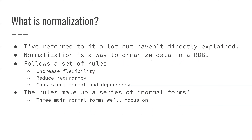So let's jump right in. What is normalization? I've referred to it a lot but haven't directly explained it, but essentially it comes down to this: it's a way to organize data in a relational database. The key thing here is that it follows a set of rules, and these rules have goals. One of the goals is that it increases flexibility — the ease of being able to expand the information contained or change the information contained.